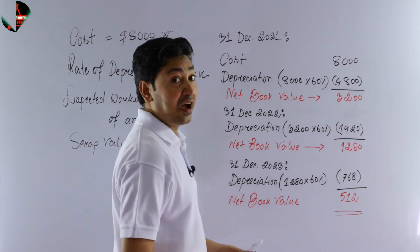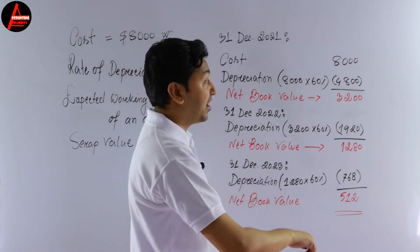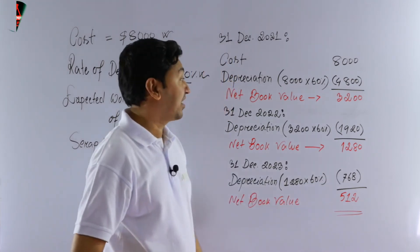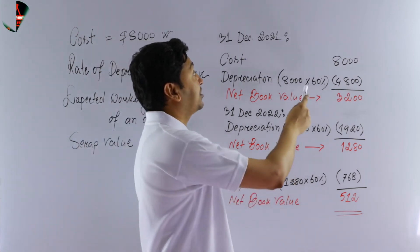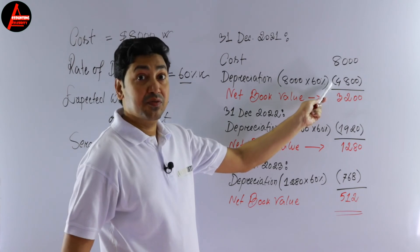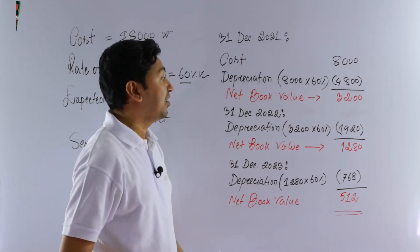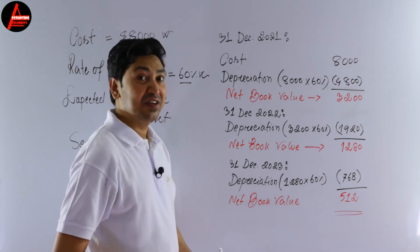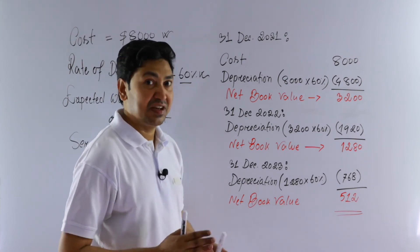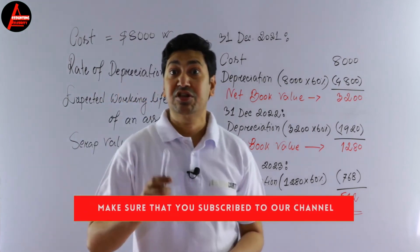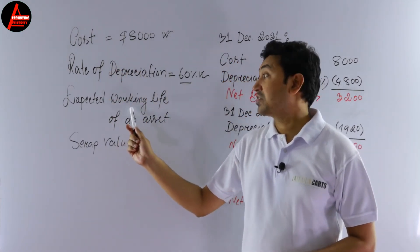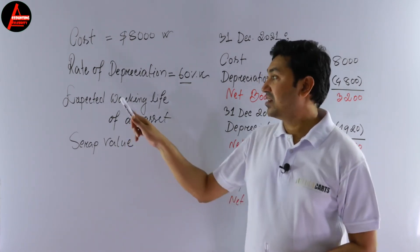You will have noticed that over the three years the amount of depreciation has been reducing. First year it was $4,800, second year it was $1,920, third year it was $768. Two things we learned here: first, how to calculate the depreciation; second, how to calculate the net book value — net book value equals cost minus accumulated depreciation. Most importantly, you only take the cost price and the rate of depreciation; ignore the expected working life and the scrap value given in the question — these are extra items.